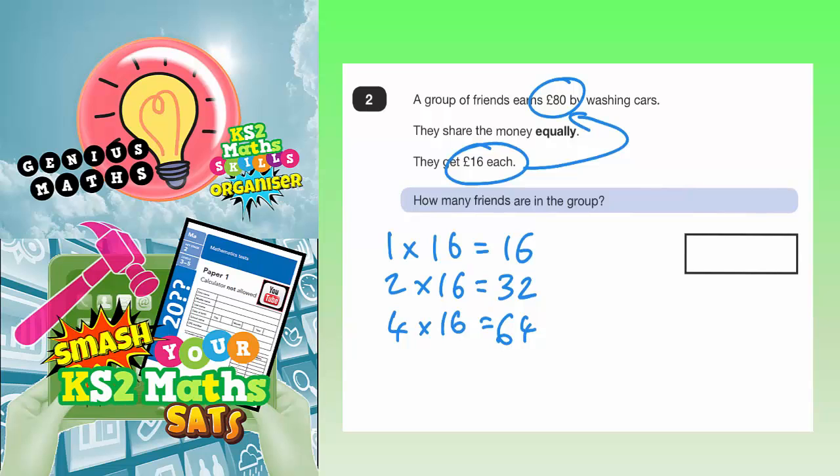And then from there, to get from 64 to 80, well let's just see what happens if we add on an extra 16. So 4 and 6 makes 10, put the 0 in, carry the 1. 6 plus 1 is 7, plus the 1 is 8. So when you add an extra 16 onto 64, you do actually get your £80.